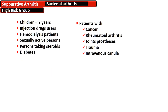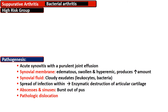High-risk groups include children below age 2, intravenous drug abusers, hemodialysis patients, sexually active persons especially those practicing polygamy, persons taking steroids, and those with diabetes mellitus. Additionally, patients with cancer, rheumatoid arthritis, joint prosthesis, trauma, and IV cannula are among the highest risk groups for this disease.